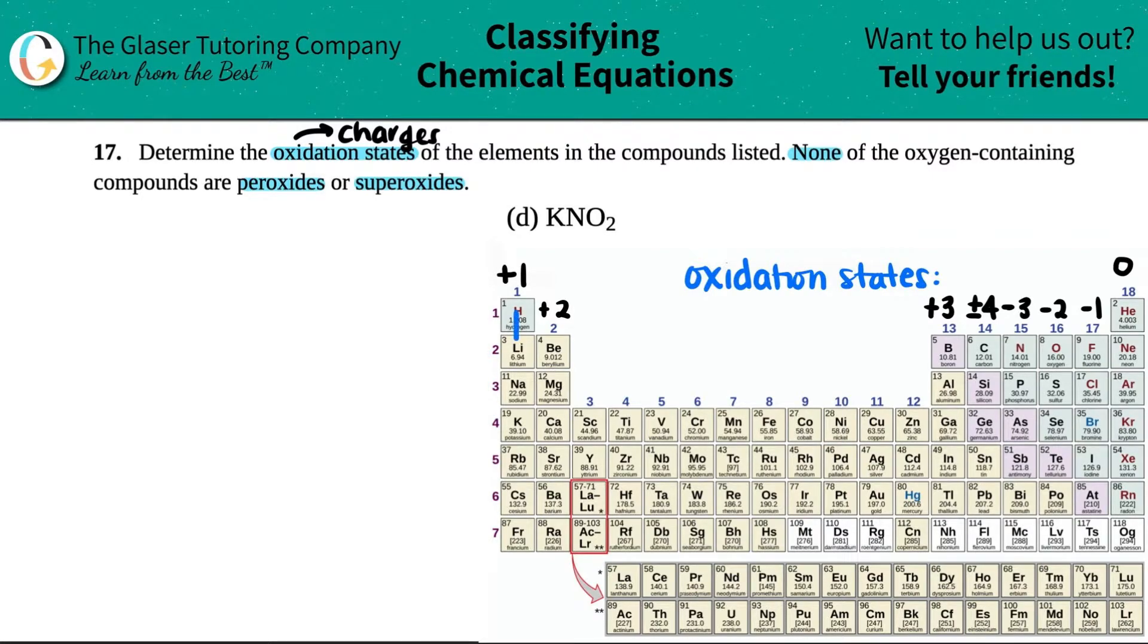Just know that for the majority of the time, the charges of the group will be the same charge. Group 1 generally will have a +1 charge—it will lose one electron when it becomes a compound. Group 2: +2, it lost two electrons. And then this trend as well, so you'll start getting into negatives on the right side, which means that you gained electrons.